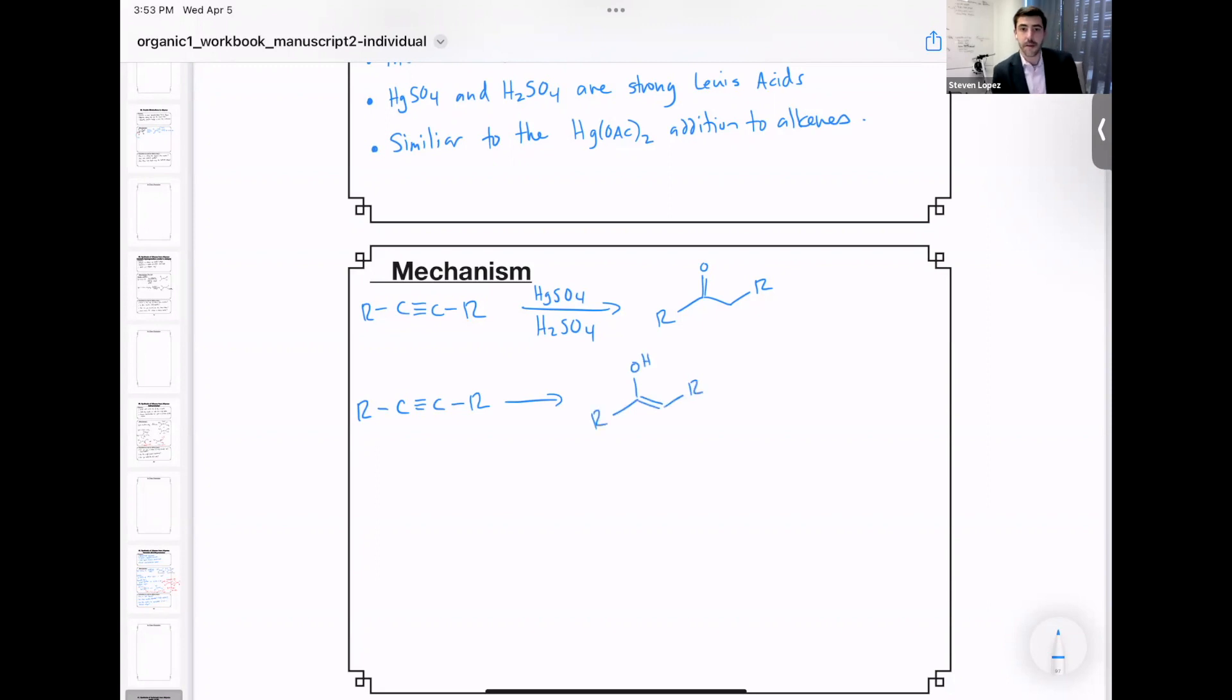The first step makes this enol that's shown here, and because this reaction is in the presence of sulfuric acid, it undergoes an enol keto tautomerization or isomerization reaction to afford this ketone.